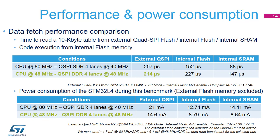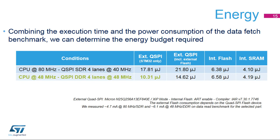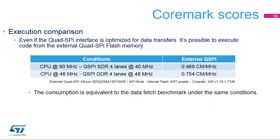The STM32L4's power consumption is higher when using the Quad SPI flash memory because of I/O toggling. Combining the execution time and the power consumption during the benchmark, we can obtain an overall picture of the energy budget. The DDR mode is the most optimized in terms of energy consumption for a given task. Even if the Quad SPI interface is optimized for data transfers, it's possible to execute code from the external Quad SPI flash memory. The core mark results are better when using DDR mode.